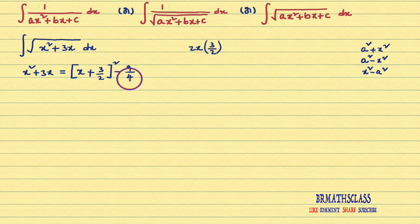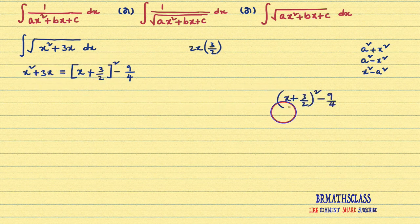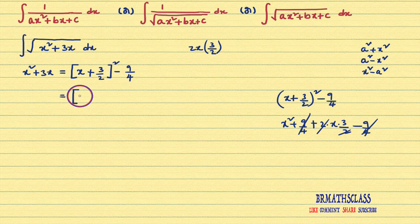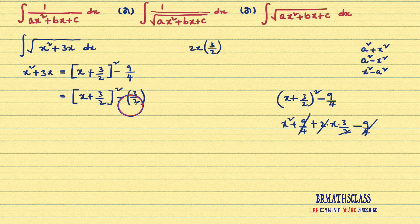3/2 whole square is 9/4. If you want, you can check this expression — if you expand it, you will get x² + 3x only. When you expand using a² + 2ab + b²: 2 × x × 3/2 − 9/4, the +9/4 and −9/4 cancel, and 2 cancels, leaving x² + 3x only. So x² + 3x equals (x + 3/2)² − 9/4, and 9/4 can be written as (3/2)².